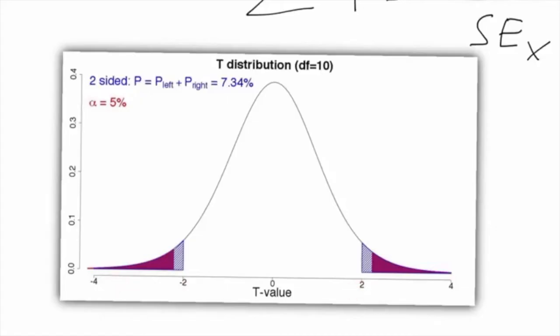So suppose we are only interested in the right value. Then the left value, and thus the left surface, the left p-value, is no longer included.